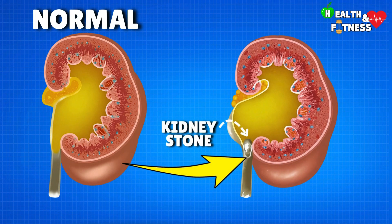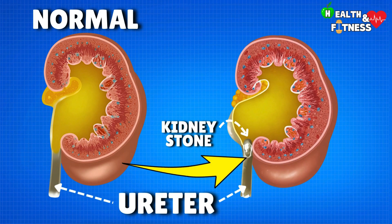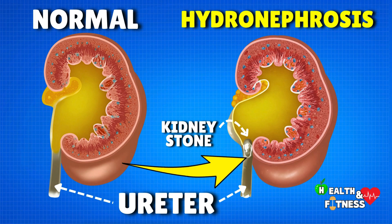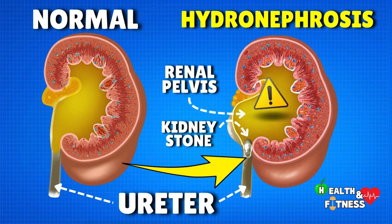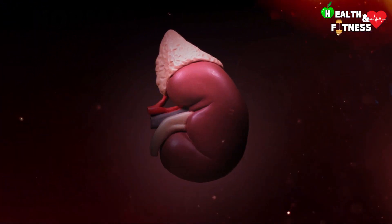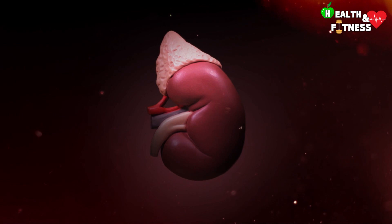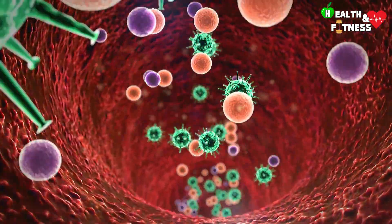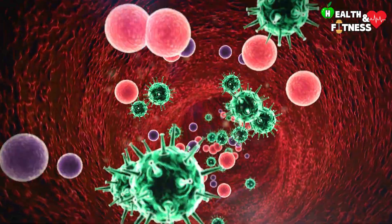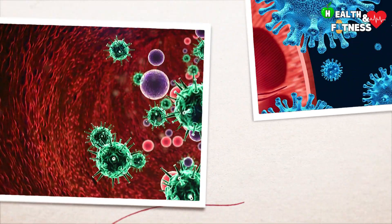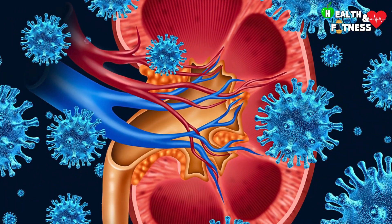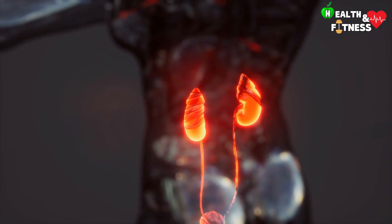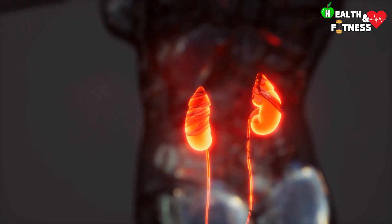If the kidney stone completely obstructs the ureter, urine can accumulate inside the kidney, giving rise to what is called hydronephrosis. This is a pathological condition characterized by dilation of the renal pelvis, the first portion of the urinary tract. The stagnation of urine causes an increase in pressure inside the kidney and the ureter, compromising not only the function of the organ but also favoring the proliferation of bacteria and other microorganisms. This increases the risk of developing pyelonephritis, a chronic-acute inflammation, mostly infectious in nature, affecting one or both kidneys.